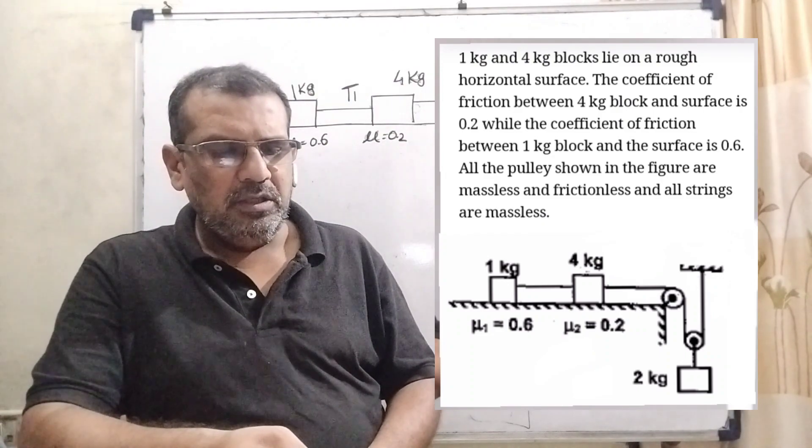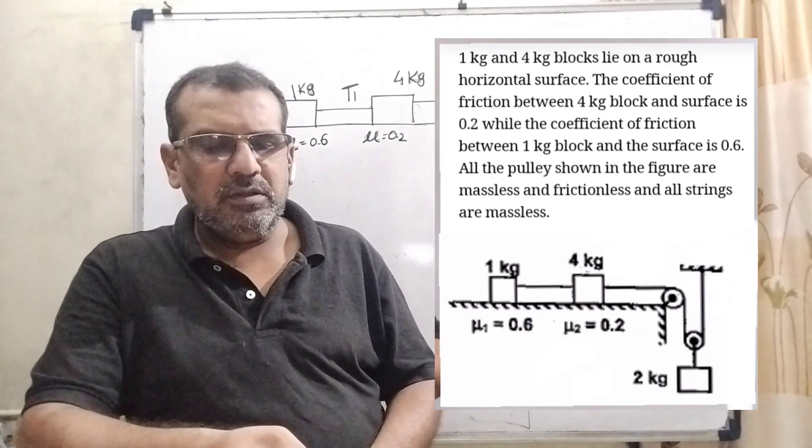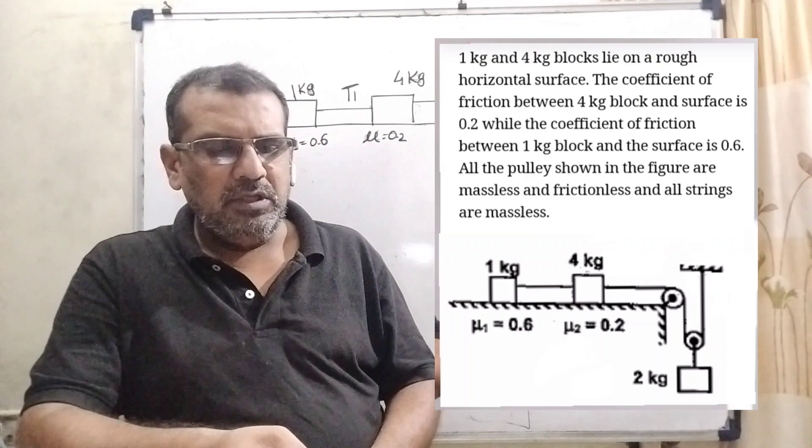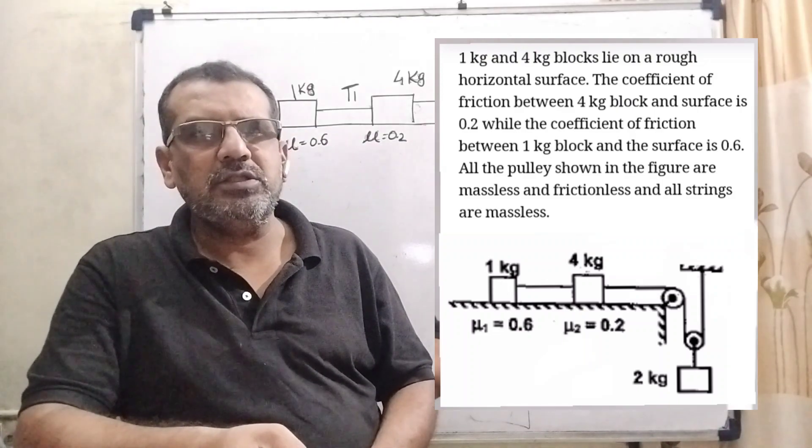Option C: The tension in the string connecting 4 block and 1 block is 2 Newton. Option D: The tension in the string connecting 1 kilogram block and 4 kilogram block is 0.